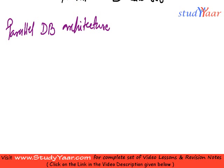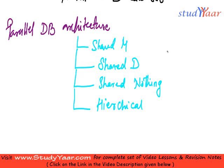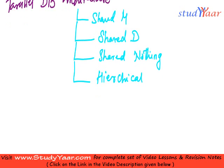I have four major architectures. First is Shared Memory, next is Shared Disk, then we have Shared Nothing — where we do not share disk and we do not share memory. And finally, we have Hierarchical Architecture, which is a combination of these three. If you combine them in a certain way, you get a Hierarchical Architecture. I will explain all of these in greater detail, one by one.